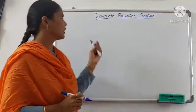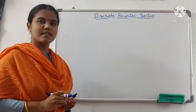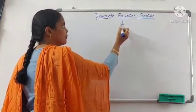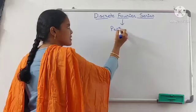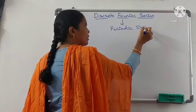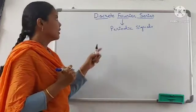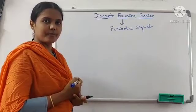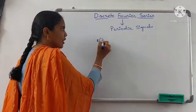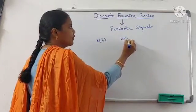Today I am going to explain discrete Fourier series. Discrete Fourier series is applicable for periodic signals. In signals and systems we have seen continuous Fourier series, which is represented as x of t, whereas in discrete Fourier series it is represented as x of n.